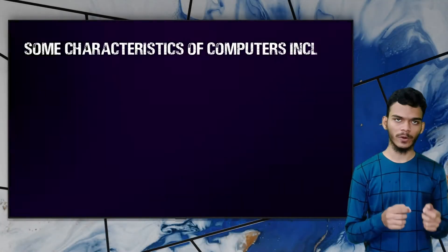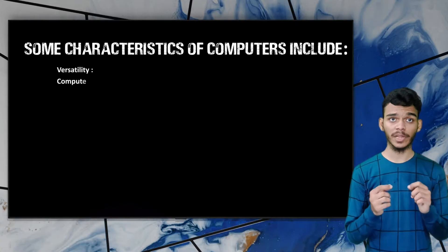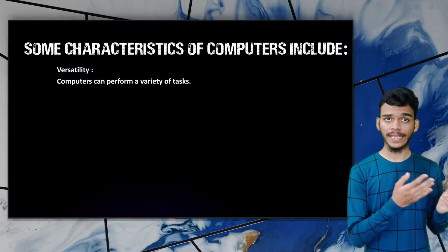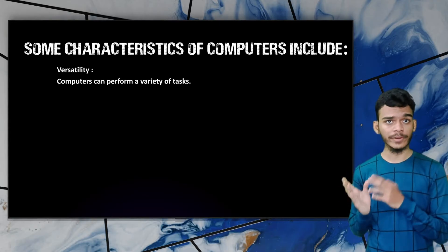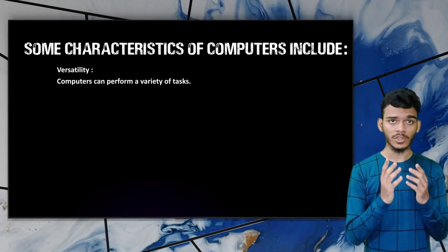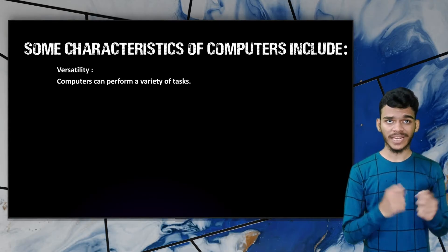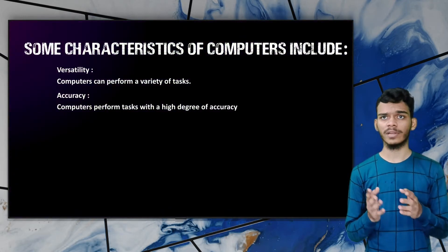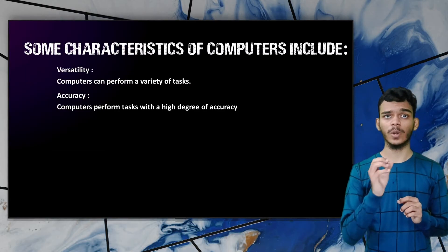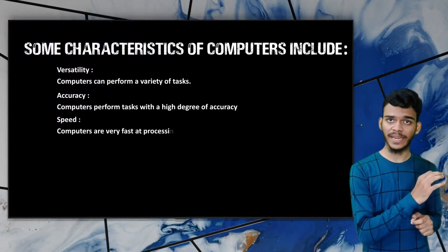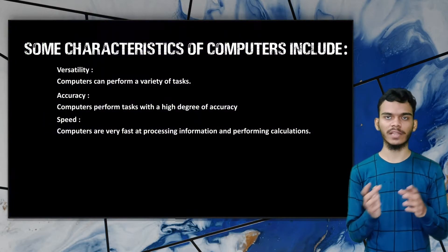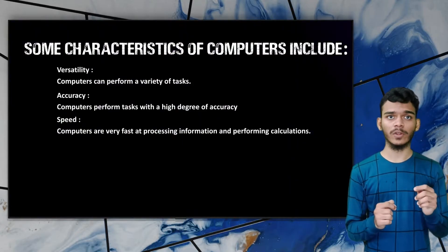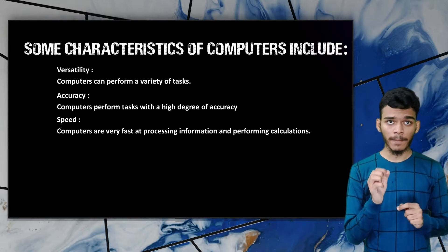Some characteristics of computers include versatility, where a computer can perform a variety of different tasks such as playing songs, playing video games, developing software, and developing operating systems. Coming to the second one, accuracy — a computer can perform tasks with a high degree of accuracy without any error. Speed — a computer is very fast at processing information and performing calculations, millions of calculations at a time within a millisecond.